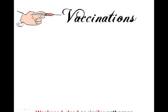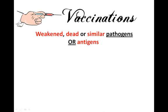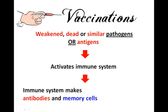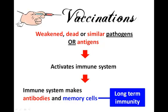So what is the science behind vaccinations? Vaccinations involve injecting a person with a weakened, dead or similar pathogen, or with antigens, and this activates their immune system. When the vaccine enters the body, lymphocytes that recognise the antigen respond to it as if it was the real disease. This causes the immune system to make antibodies and memory cells. The memory cells provide the long-term immunity.